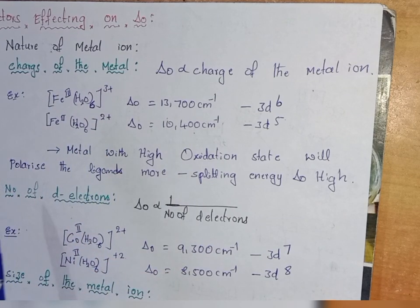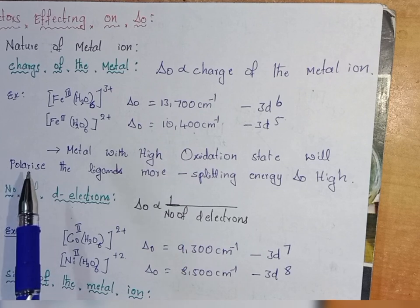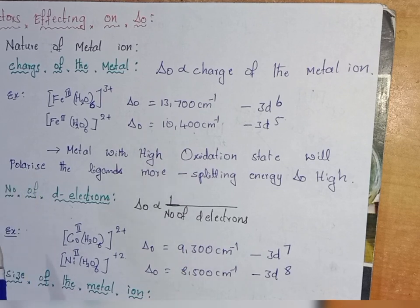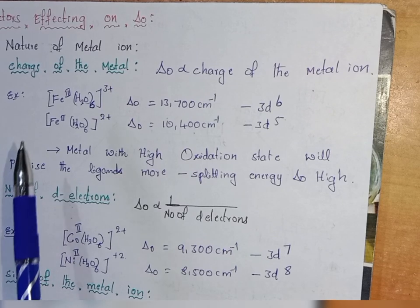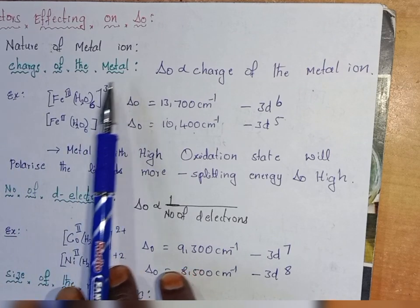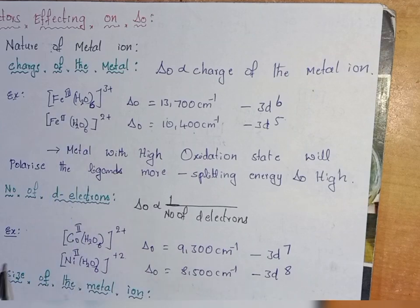The factors are: nature of the metal ion, nature of ligands, and geometry of the complex. First we will see the factors of the metal ion — nature of metal ion.